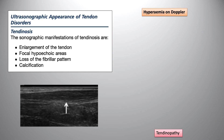Moving on to tendinopathy — an extremely common presentation in MSK practice. When we look into tendinosis or tendinopathy, the ultrasound features include enlargement and thickening of the tendon, focal hypoechoic darkened regions, loss of the normal fibrillar pattern, possible calcification, and increased vascularity. The hyperechoic fibrillar pattern is lost and you can get focal areas of change.